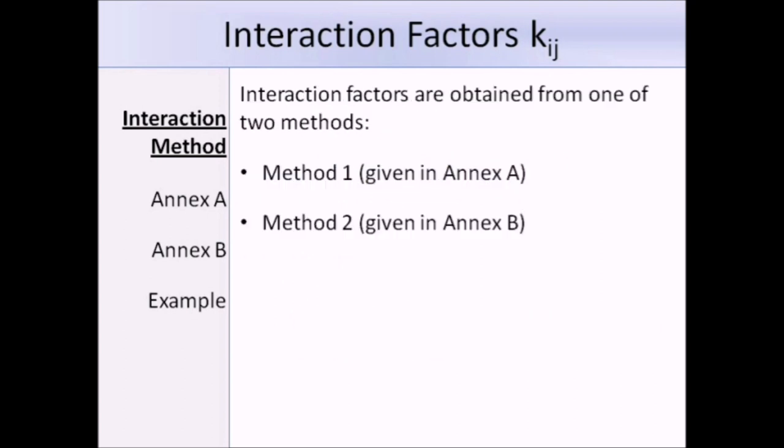As I said before, the interaction factors can be obtained using two methods. The first method involves referring to Annex A, whereas the second method involves referring to Annex B. Annex A is slightly more complicated, but using it usually results in greater efficiency.